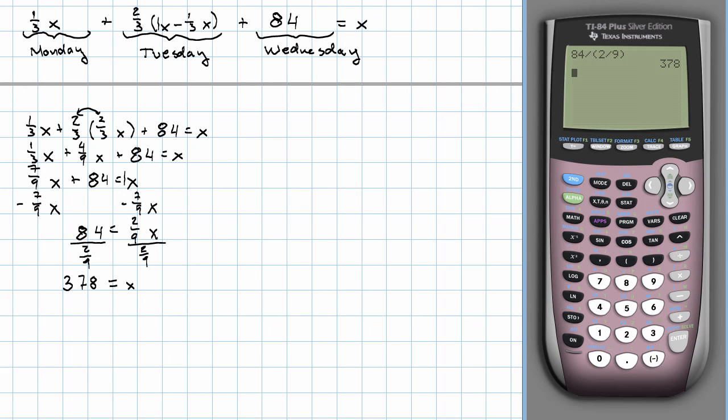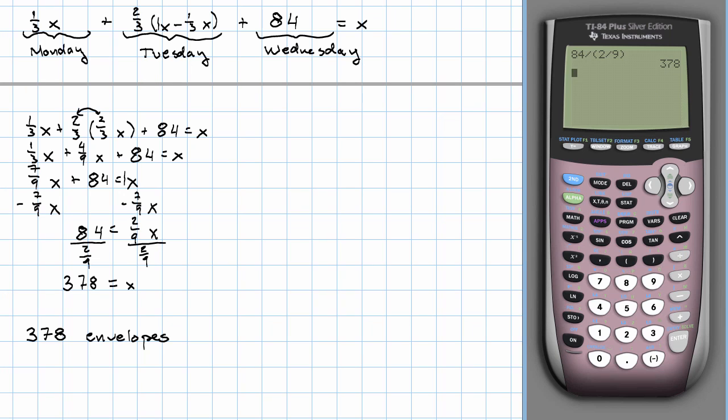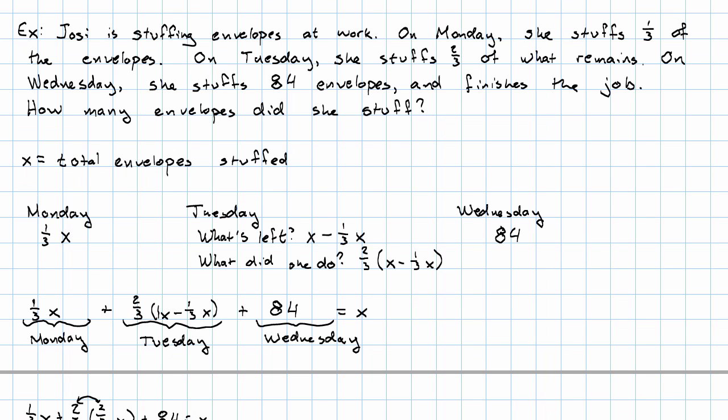How many envelopes did Josie stuff? 378 envelopes. As usual in an application problem, once we had the equation set up, it was just a matter of calculation. It wasn't that big a deal. How did we set up this equation? Again, we broke our problem down into parts. In this case, what she did on Monday, what she did on Tuesday, and what she did on Wednesday. And then we put those expressions together, in this case into an equation, in order to answer the question.